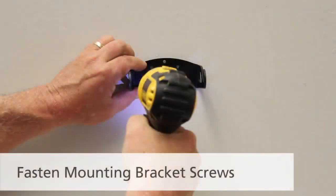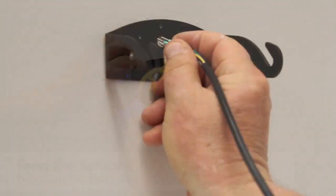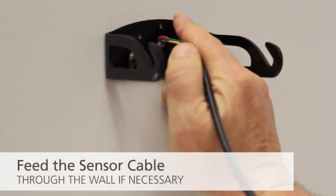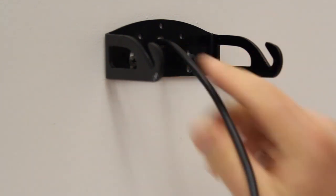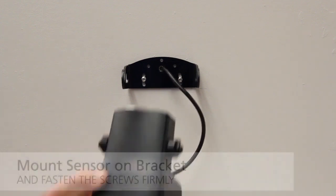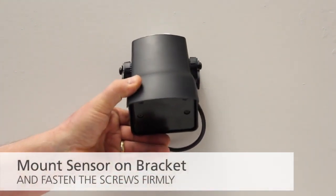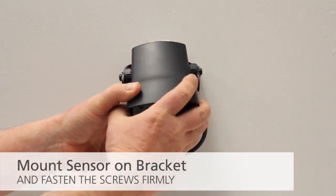Fasten the screws for the mounting bracket. Feed the sensor cable through the wall if necessary. Mount the sensor on the bracket and fasten the screws firmly.